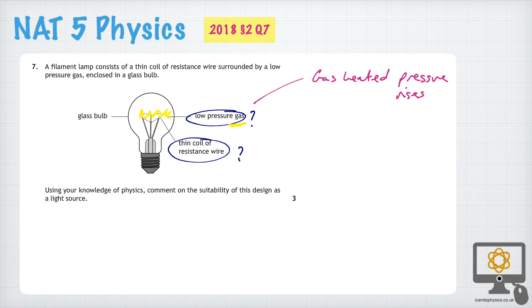And so the key thing is you do not want that gas to become a high-pressure gas. Because if it were a high-pressure gas, then the bulb itself, the glass, might break.